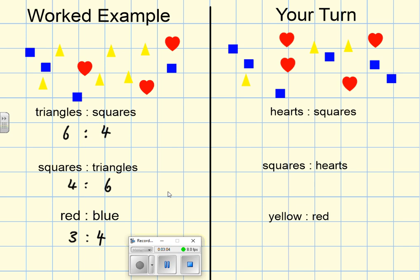Okay, let's have a look at this one here then. Hearts to squares—this is the answer to your turn, and you can see how you've got on in your jotter. So hearts to squares: I'm going to count the number of hearts first of all—1, 2, 3, 4—so I can write down there are 4 hearts.